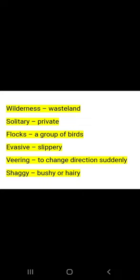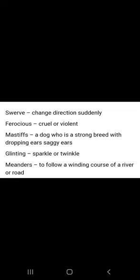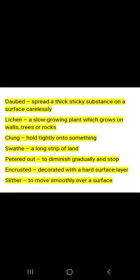Shaggy means bushy or hairy. Swerve means to change direction suddenly. Ferocious means cruel or violent. Mastiffs is a dog that is a strong breed with drooping ears. Glinting means to sparkle or twinkle. Meanders means to follow a winding course of a river or road. Daubed means to spread a thick sticky substance on a surface carelessly. Lichen is a slow growing plant which grows on walls, trees or rocks — also known as moss.